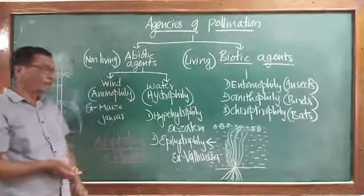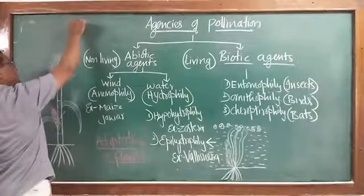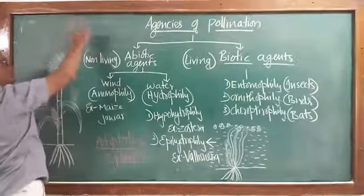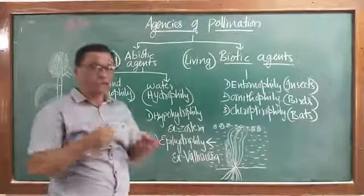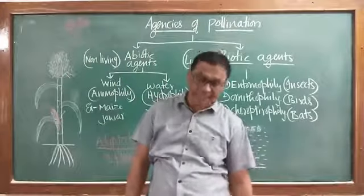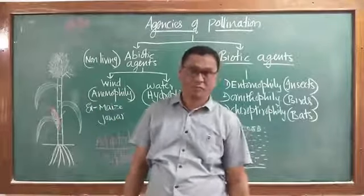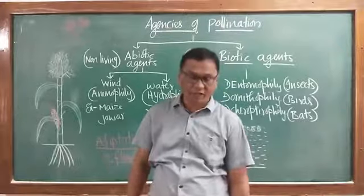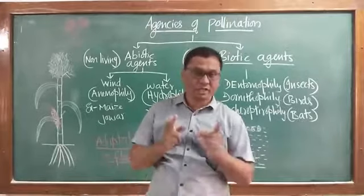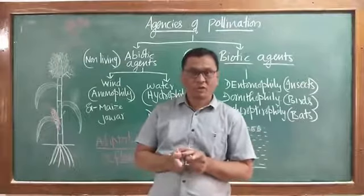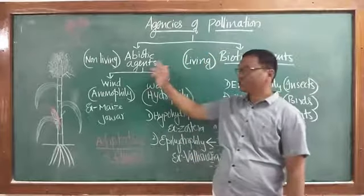The stigma in wind-pollinated plants is feathery in most cases, so that pollen grains carried by the wind can be captured in its feathers. Once captured, the further process of pollination and fertilization is carried out. These are the important adaptations of anemophilous flowers.